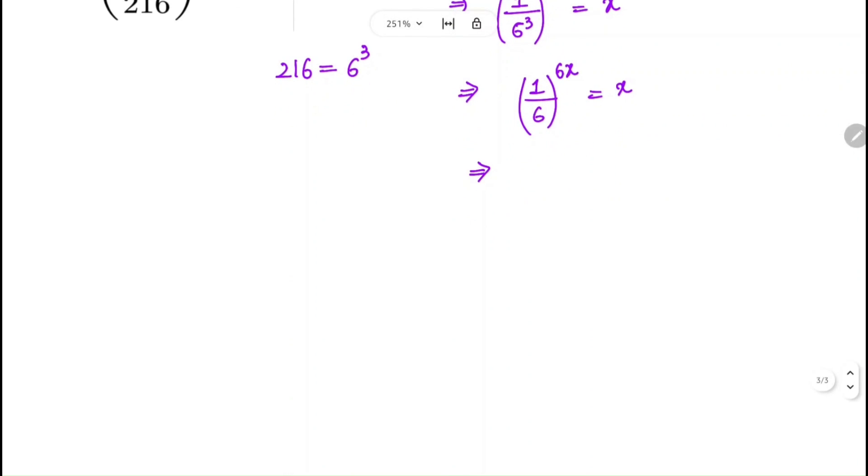Now sending exponent to the RHS, we get (1/6)^6 = x raised to the power 1 by x.